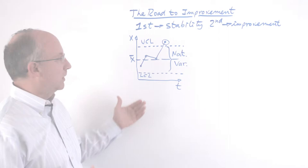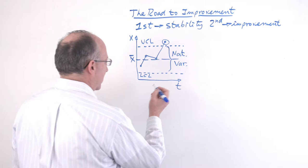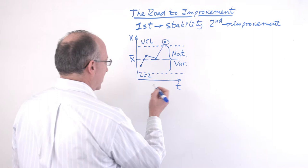And so what we say here is that what we have is a process that is not in control. That means it's not predictable. Now, initially, from practice we know that most processes are like this. This is sort of like the natural condition.